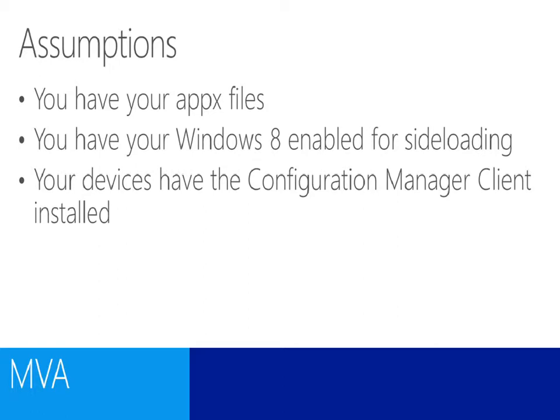There are a few assumptions in place for this module. First, you have the APPX files for your application. If not, hopefully the app is available through the Windows Store and you're looking to deploy a Windows Store application using the deep linking process. Second, your Windows 8 device is enabled for sideloading — for Windows 8 Pro that means installing sideloading product keys, which can be done via scripting with Windows Intune. Finally, we're assuming the client devices don't have the Configuration Manager client installed, as the two clients are not entirely compatible.